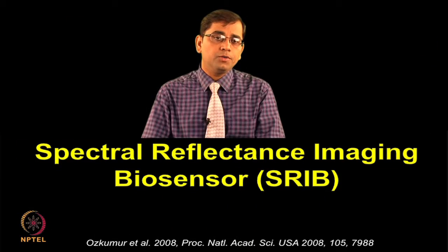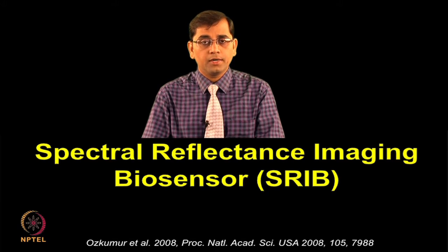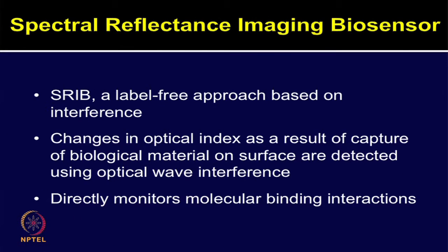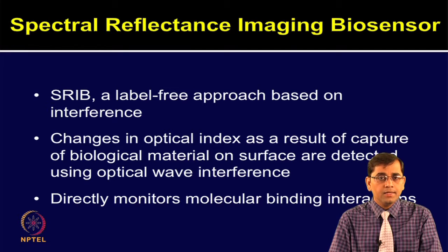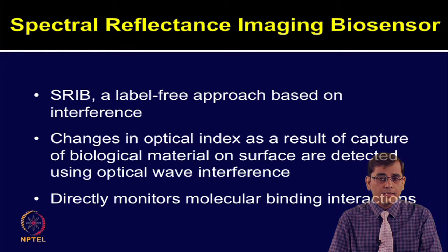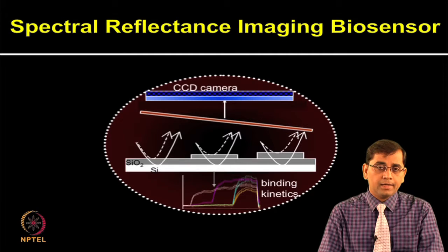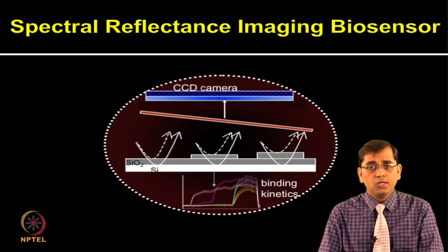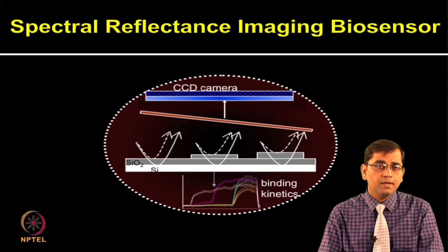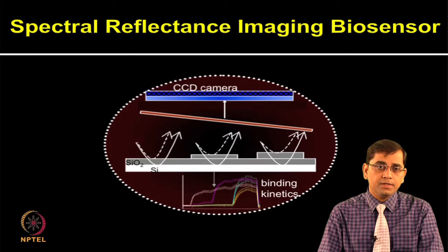Let us now discuss spectral reflectance imaging biosensor, or SRIB. It is a label-free approach based on interference. Changes in optical index as a result of capture of biological material on the surface can be detected using optical wave interference. SRIB monitors molecular binding interactions directly. The interference of light reflected from the silicon dioxide surface increases the optical path length difference caused by biomolecular binding, which is measured by the spectral reflectance imaging biosensor.